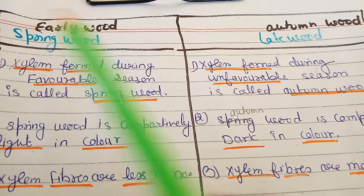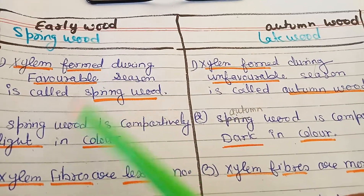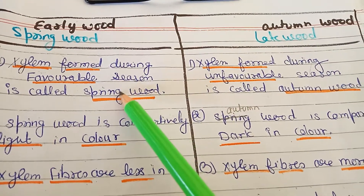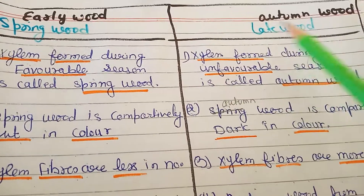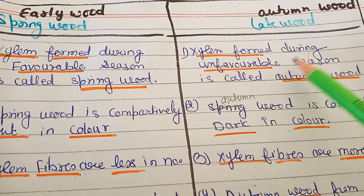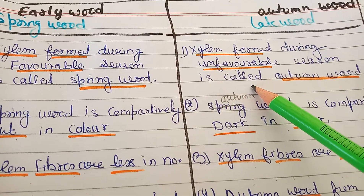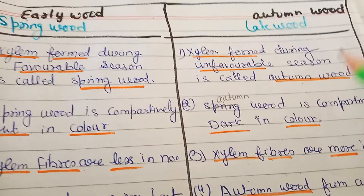Xylem formed during the favorable season makes spring wood. Xylem formed during the unfavorable season forms autumn wood.